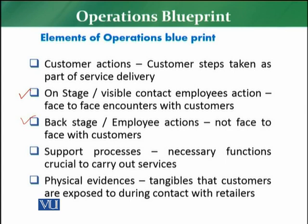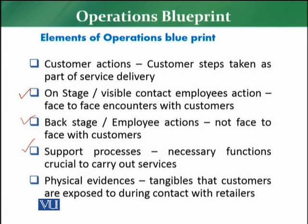The next element is Support Processes — all the necessary functions that are crucial to carry out services have to be listed down. For example, if a customer wants to come to your store, there is a registration process for obtaining a customer card. This process should be mentioned — what checklist the customer must complete to get that card. Similarly, if he wants to get a trolley, return goods, complain about a product, or pay by credit card, debit card, or cash — whatever the mechanism, it has to be mentioned specifically and systematically.